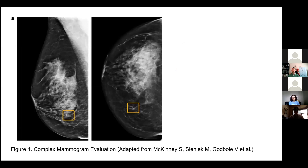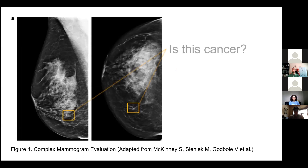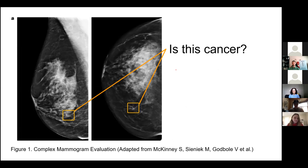I want you to take a look at this image. What you're seeing here is a mammogram of the breast — x-rays taken of the breast tissue in order to assess for cancer. What you see highlighted in this box here is some kind of abnormality, but there's a catch. I want you to think about whether or not this is cancer, this weird-looking gray spot. Just use your intuition — does this look normal to you?